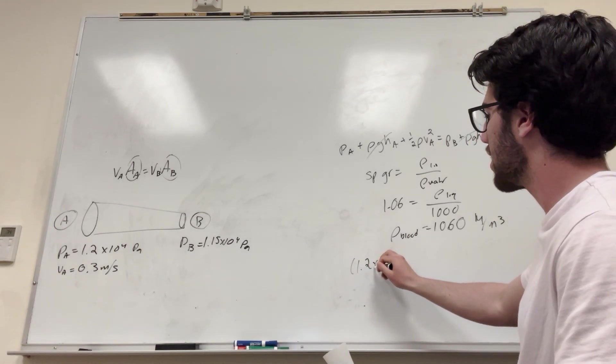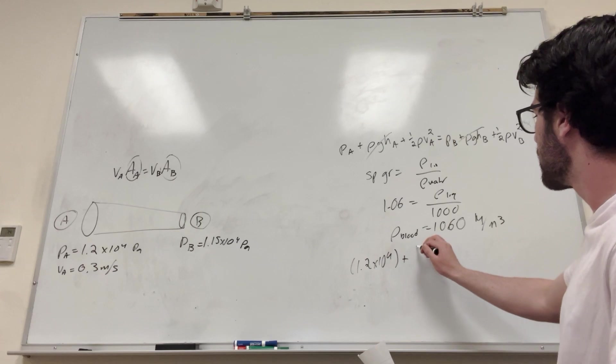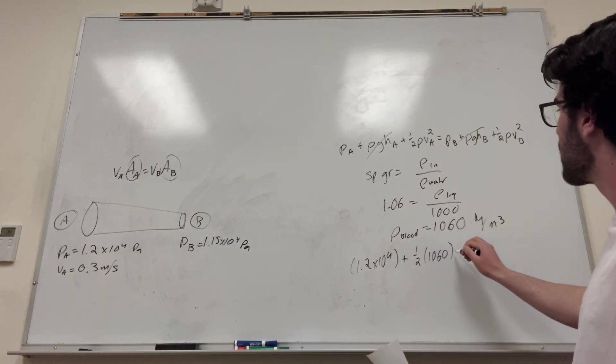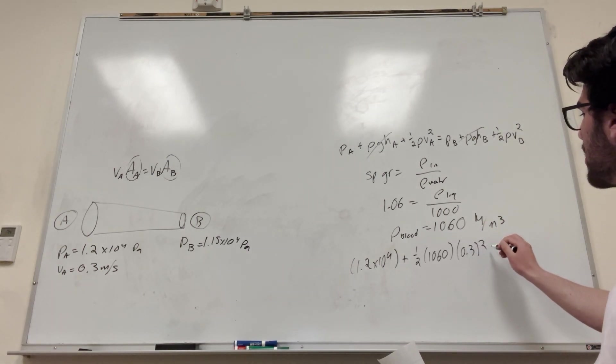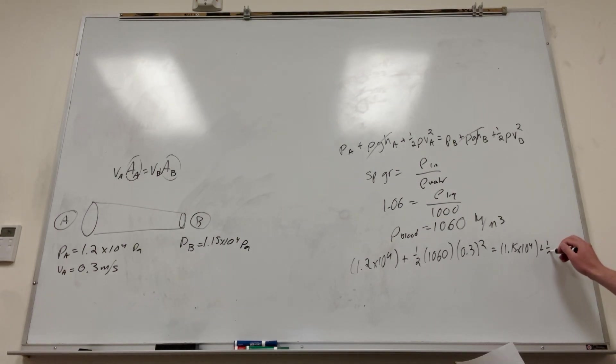So you're going to get 1.2 times 10 to the 4, plus one-half the density, 1,060, velocity of A, 0.3 squared. And that's going to be equal to 1.15 times 10 to the 4, plus one-half density again, 1,060, and then velocity of B squared.